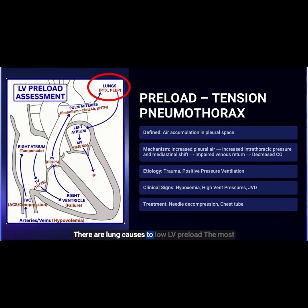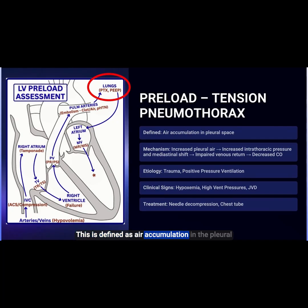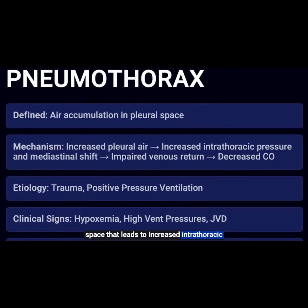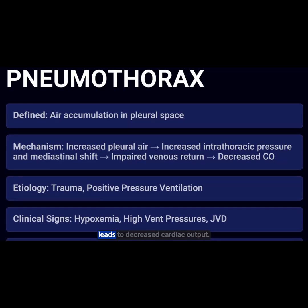There are lung causes to low LV preload. The most important of these is a tension pneumothorax, defined as air accumulation in the pleural space that leads to increased intrathoracic pressure and subsequent mediastinal shift. This will impair venous return, which leads to decreased cardiac output.